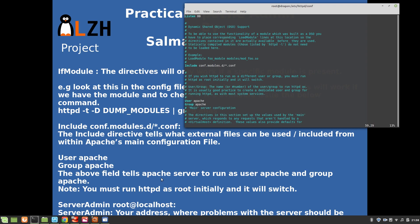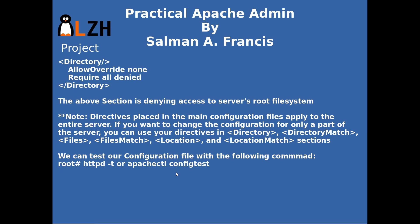The User/Group fields tell Apache to run as user 'apache' and group 'apache'. Note: you must initially run httpd as root and it will switch to the apache user. The reason is it's listening on a port less than 1024. ServerAdmin is the address where you receive problem notifications.